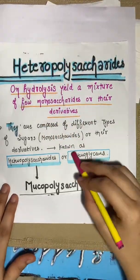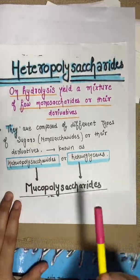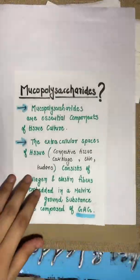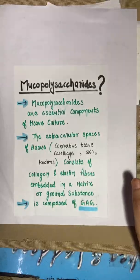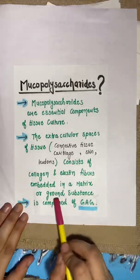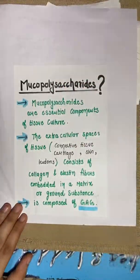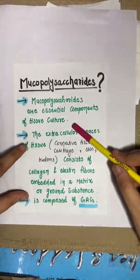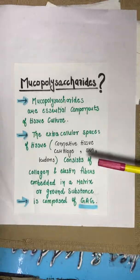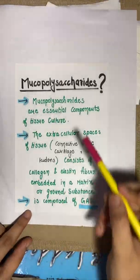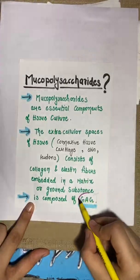The heteropolysaccharides are also called heteroglycans. The common type is mucopolysaccharides, which are heteroglycans and heteropolysaccharides. These mucopolysaccharides are found in mammalian tissues — present in the ground substance and extracellular spaces of tissues like connective tissue, cartilage, skin, and tendons. These tissues consist of collagen and elastin fibers embedded in a matrix or ground substance where mucopolysaccharides are present. A very common mucopolysaccharide is GAG.